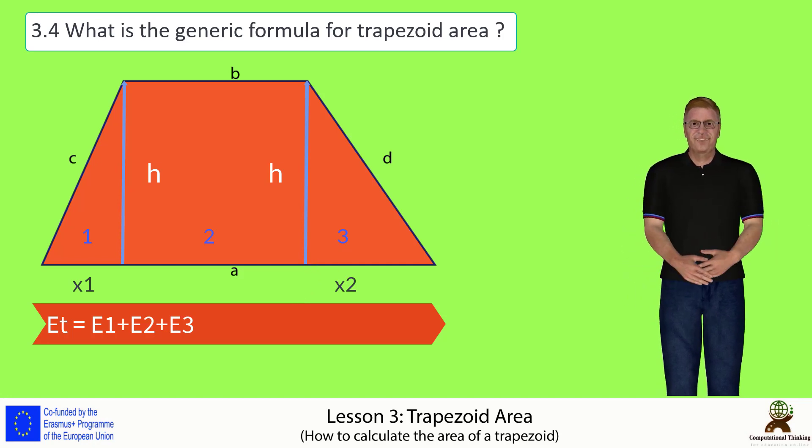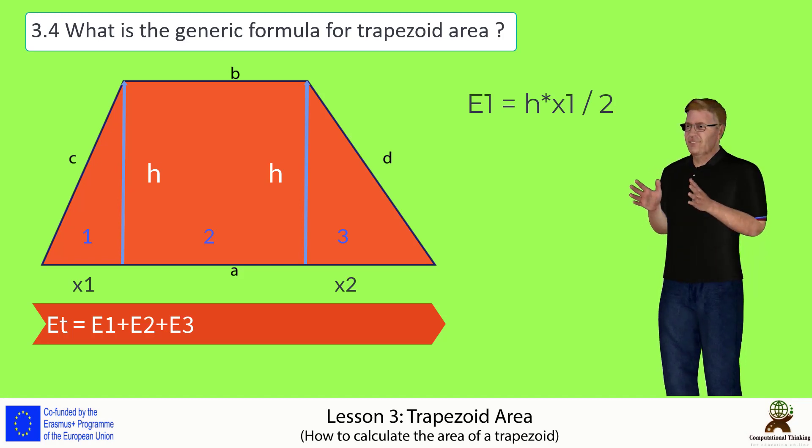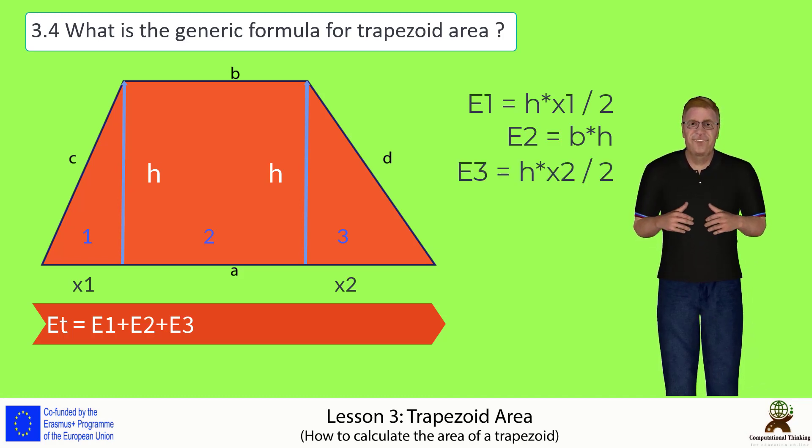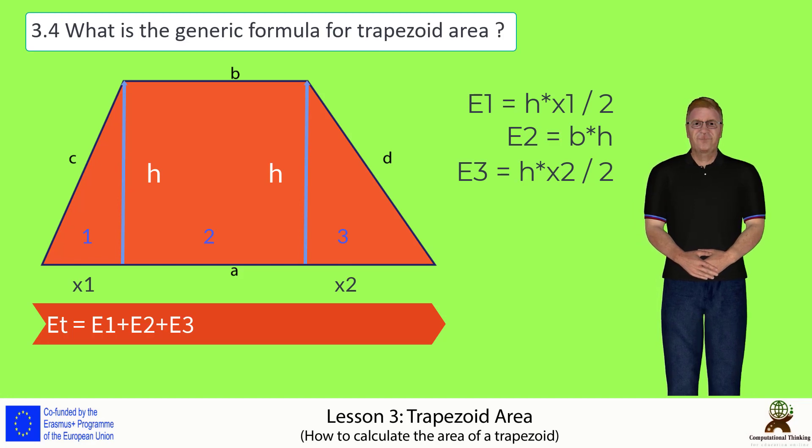We proceed with the necessary substitutions, thus the leftmost triangle area is H multiplied by X1 divided by 2. The central perpendicular rectangle area is B multiplied by H. And the rightmost right triangle area is equal to H multiplied by X2 divided by 2.